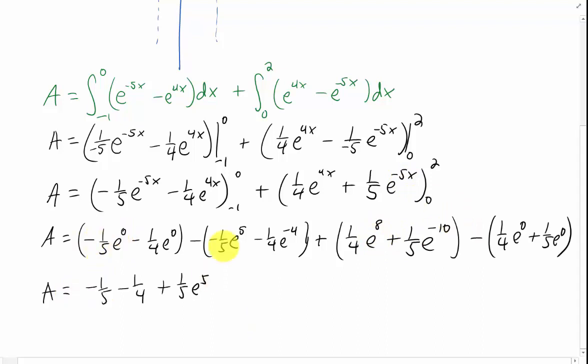Anything to the 0 power is just 1. We can distribute this negative sign through these parentheses. The third piece stays pretty much exactly the same. And the fourth piece, we can distribute the negative and call e to the 0, 1 again. And oh my gosh, this is kind of a mess. All of these e's have different powers, so there's really no way to combine these four terms.